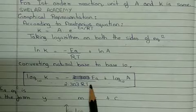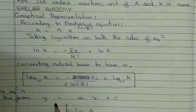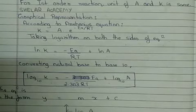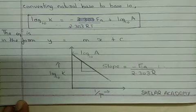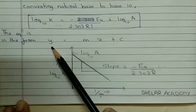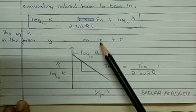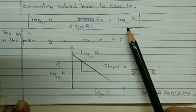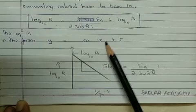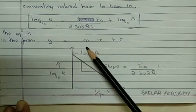Based on this, we correlate with the straight line equation Y equals MX plus C. On correlation, we get the Y axis as log₁₀ K and the X axis as 1/T, following the straight line equation with an intercept value and a slope value.